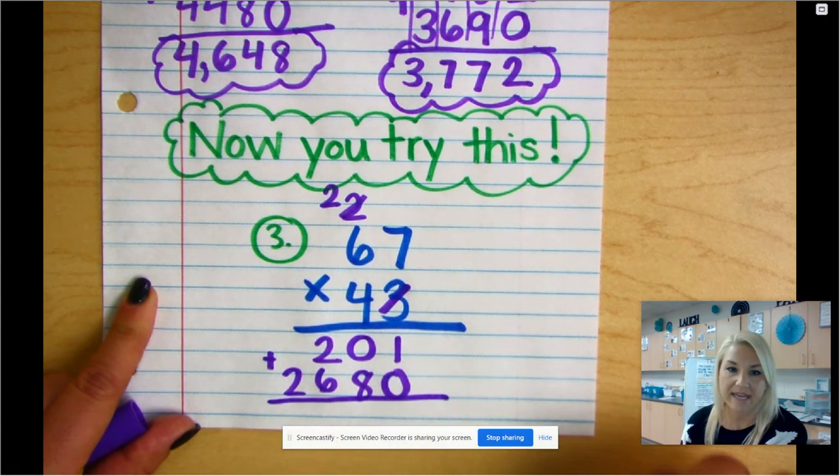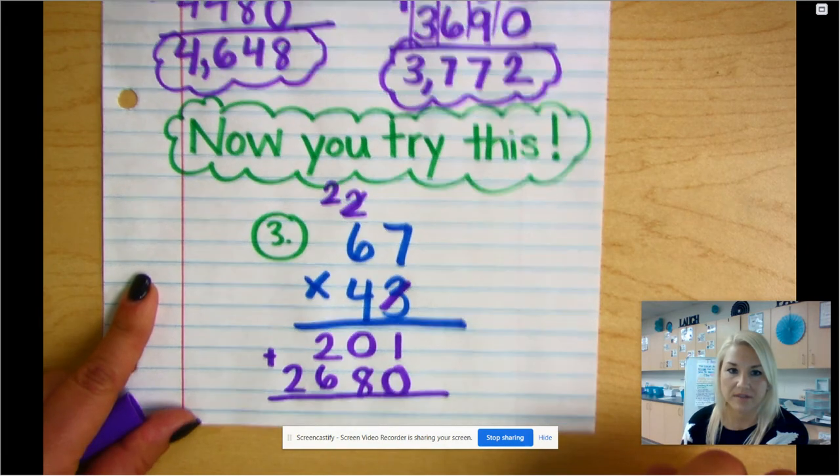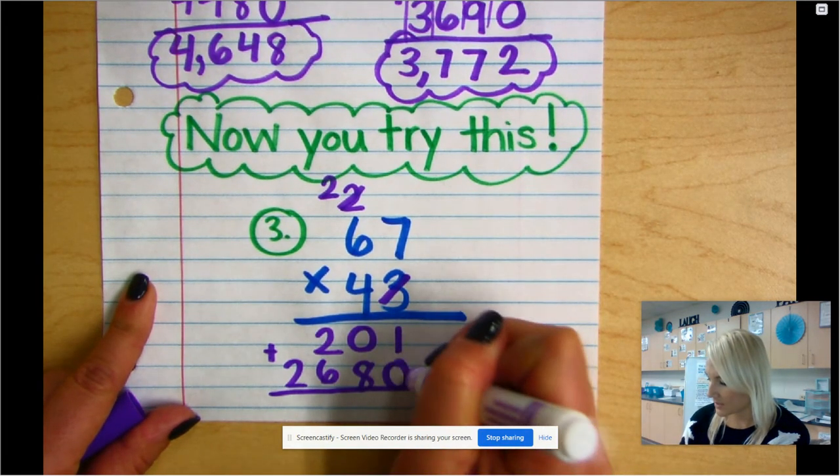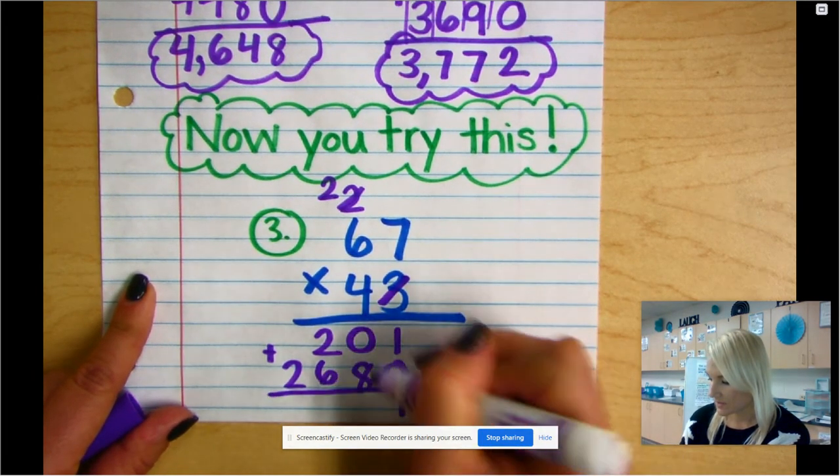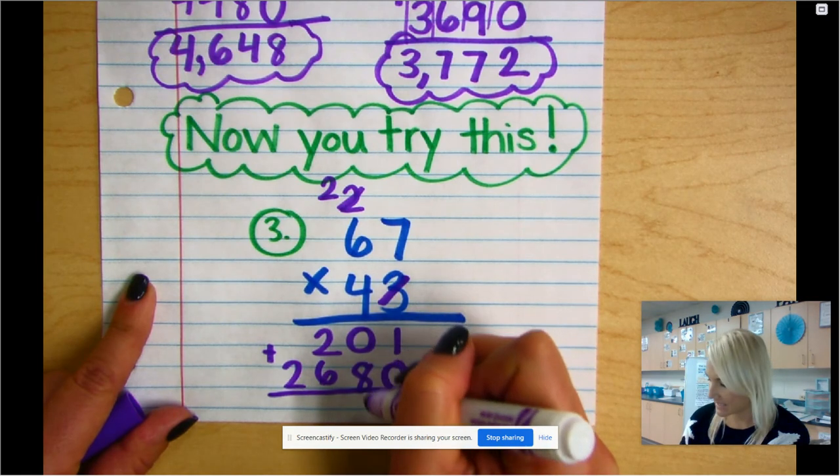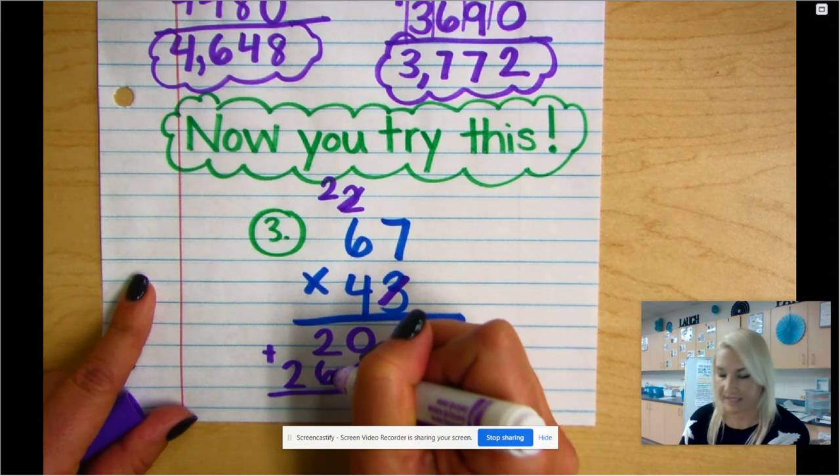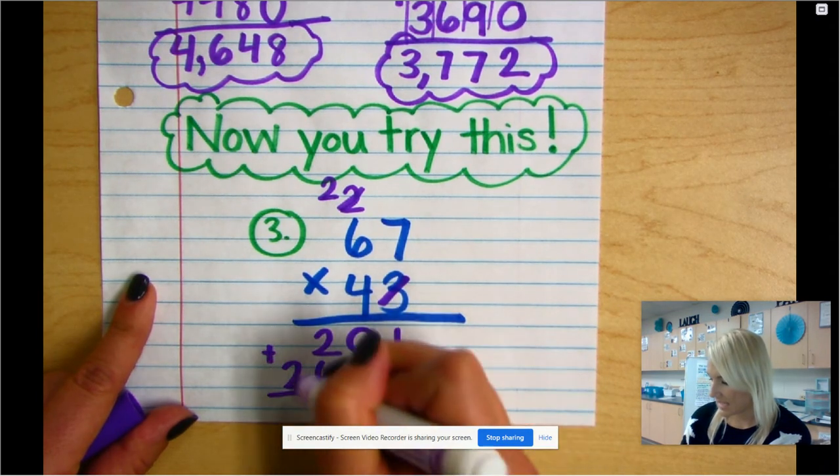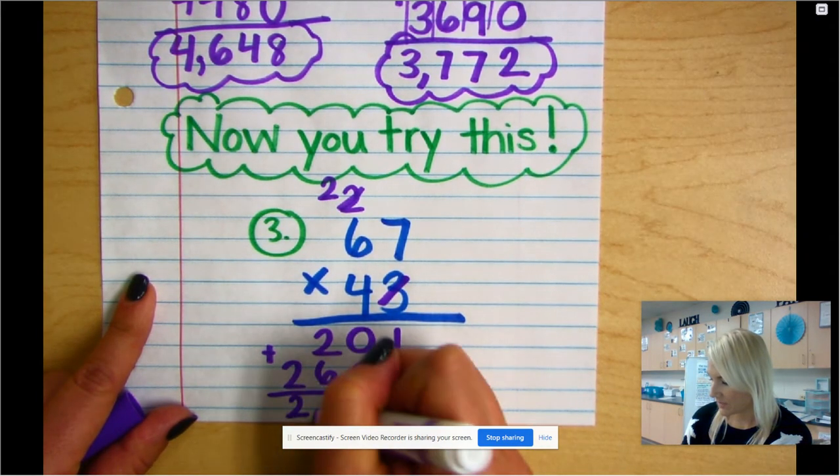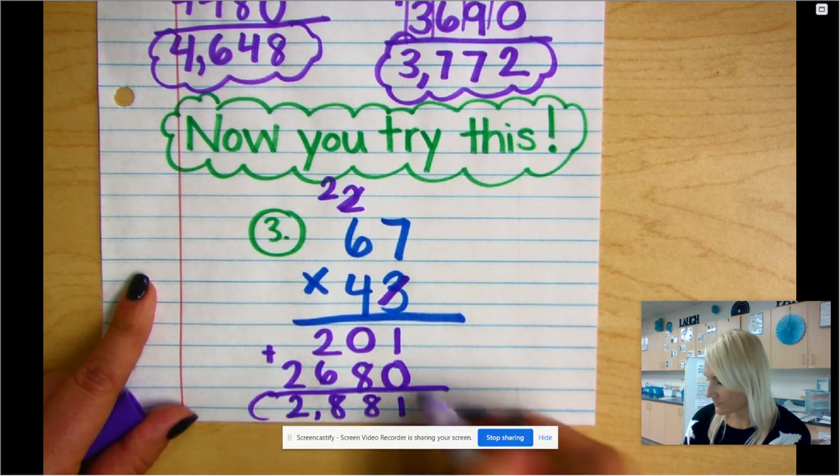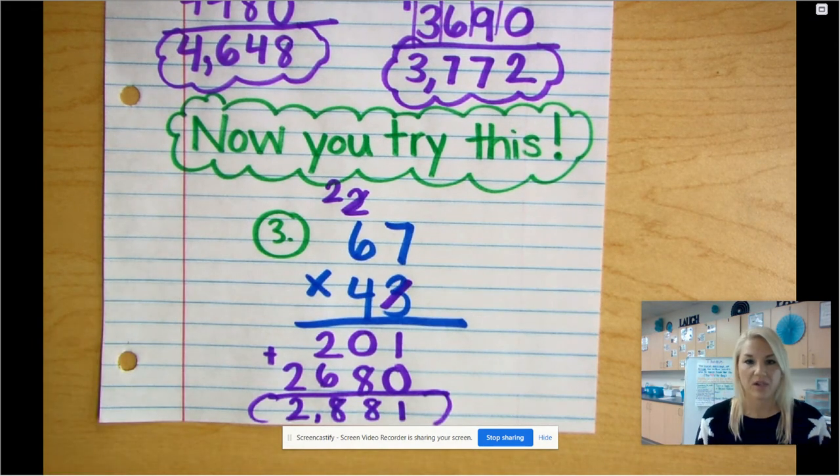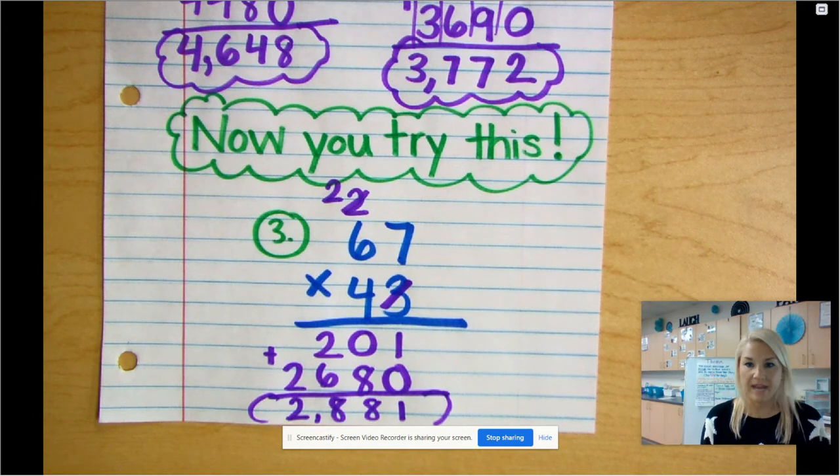And now we're gonna go ahead and add it together to find the final product. 1 plus 0 is 1. 0 plus 8 is 8. 2 plus 6 is 8. And this is just 2. Put my comma in. And hopefully your final answer, your product, was 2,881.